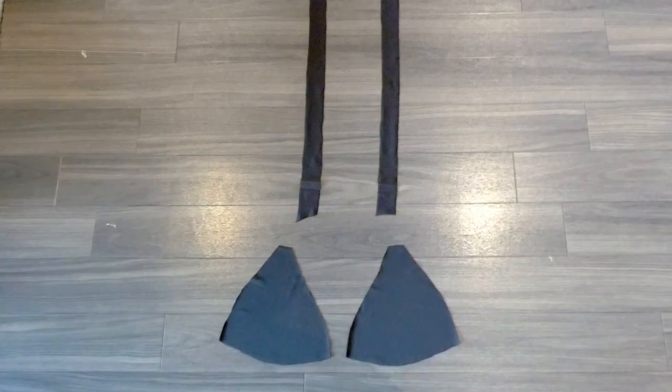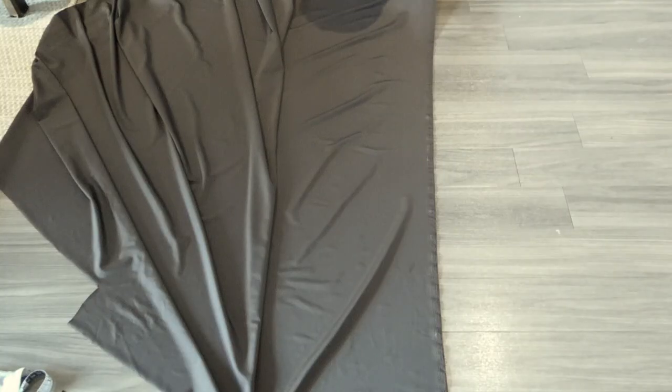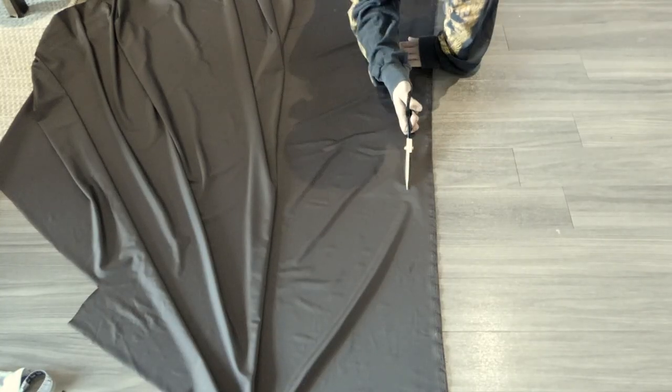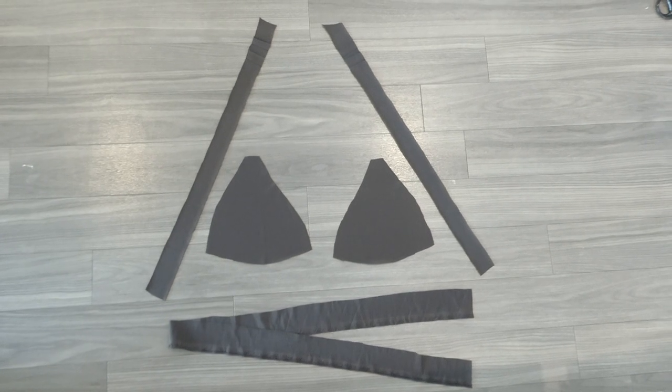So now we have two straps and two bikini triangles. Next we're cutting out the strap that needs to go along your torso and you can measure how long that should be with your measuring tape.